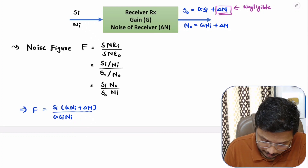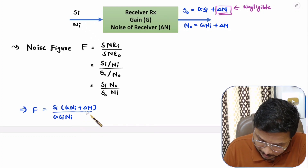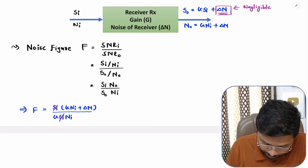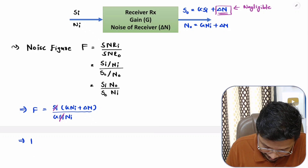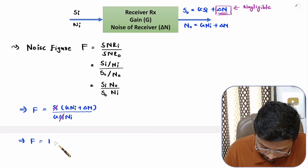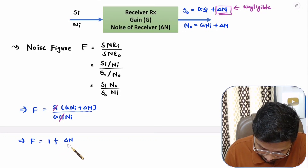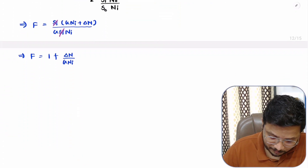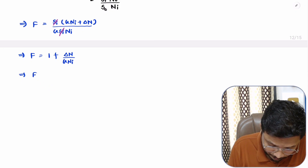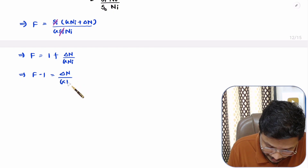If you carefully observe, Si cancels out, and we can simplify the equation. F equals (G × Ni)/(G × Ni) plus delta_n/(G × Ni), which simplifies to F = 1 + delta_n/(G × Ni). Taking 1 to the other side gives F − 1 = delta_n/(G × Ni).